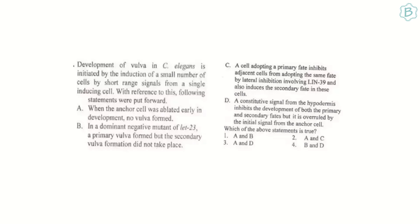Statement B: in a dominant negative mutant of LET-23, primary vulva formed but secondary vulva formation did not take place — this is incorrect because without secondary VPCs, proper vulva cannot form. Statement C: adopting a primary fate inhibits adjacent cells from adopting the same fate by lateral inhibition involving LIN-39 — this is mostly correct except it says LIN-39 instead of LIN-12, so this statement is wrong.